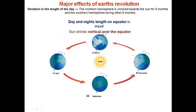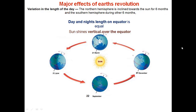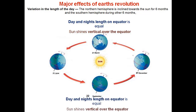Now we will learn the major effects of the earth's revolution and some facts. Variation in the length of the day: the northern hemisphere is inclined toward the sun for six months and the southern hemisphere during the other six months. As you can see with the help of the diagram, there are four positions of earth shown. On 21st of March, day and night length on equator is equal, due to the sun shining vertical over the equator. The same condition is also observed on 22nd of September — day and night length on equator is equal due to the vertical rays of the sun falling over the equator.